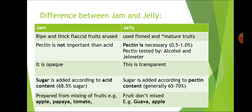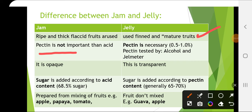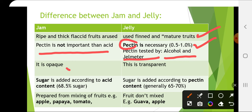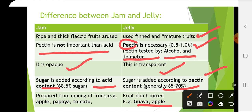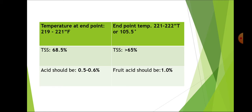Difference between jam and jelly: Jam uses ripe and thick/flaccid fruits; pectin is not as critical as acid. Jelly requires fine and mature fruits with pectin (0.5 to 1%), tested by alcohol and gel meter. Jam is opaque, jelly is transparent. Sugar in jam is added according to acid content (68.5%); in jelly according to pectin content (65 to 70%). Jam end-point temperature is 219 to 221°F. Jelly end-point is 221°F (105.5°C). TSS is 68.5% in jam and greater than 65% in jelly. Acid should be 0.5 to 0.6% in jam and 1% in jelly. Jam examples: apple, papaya, tomato; jelly examples: guava and apple (high pectin content).